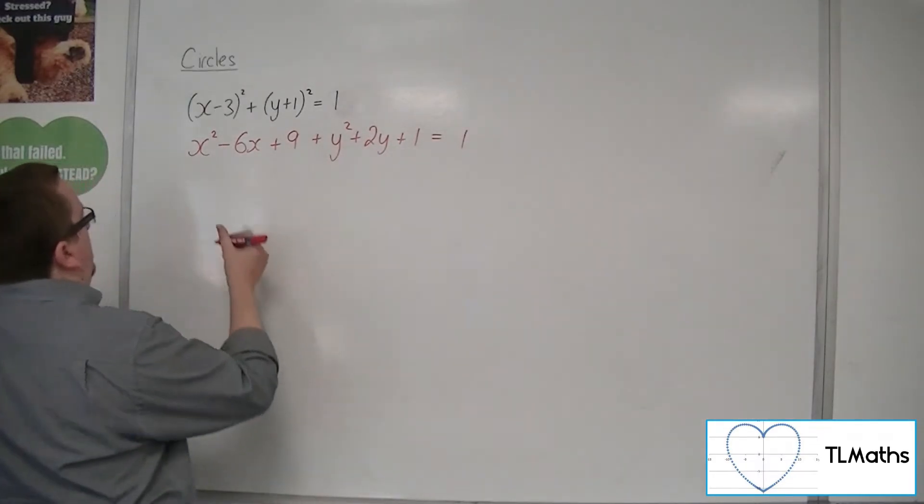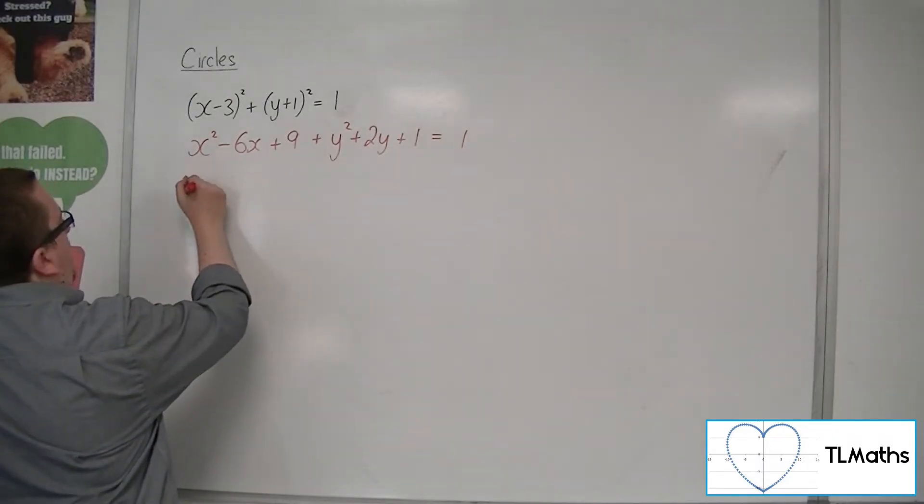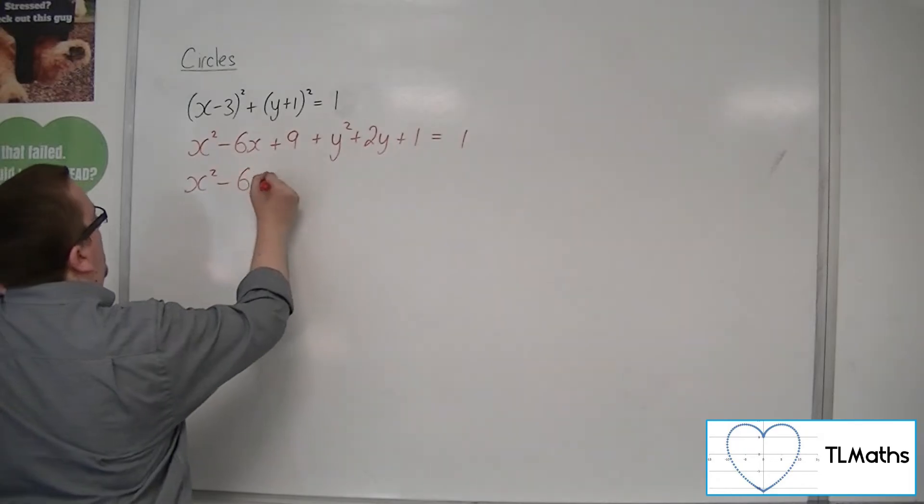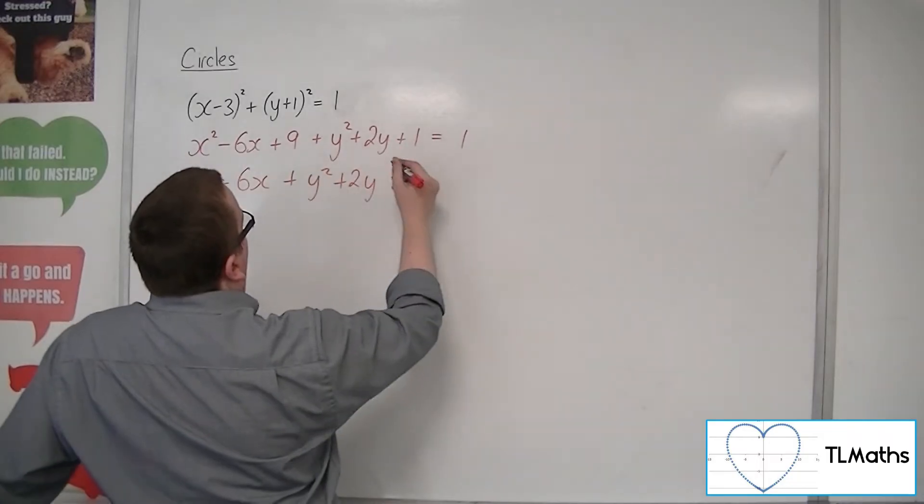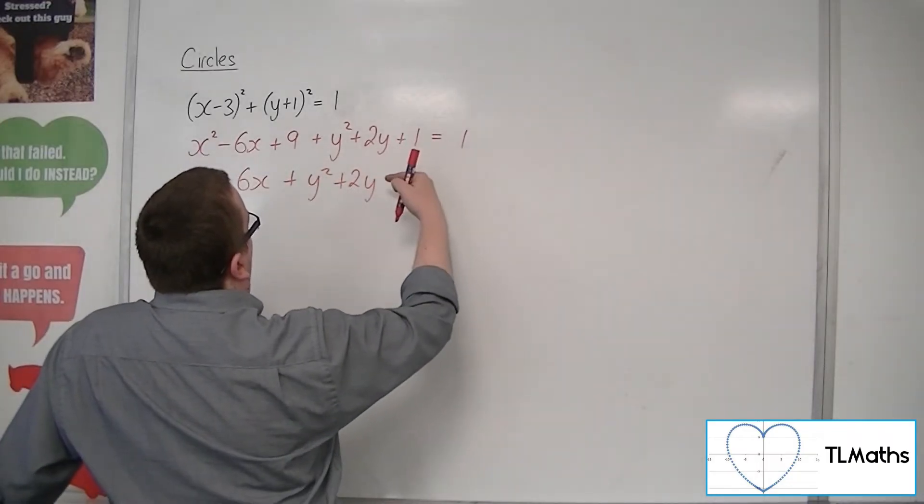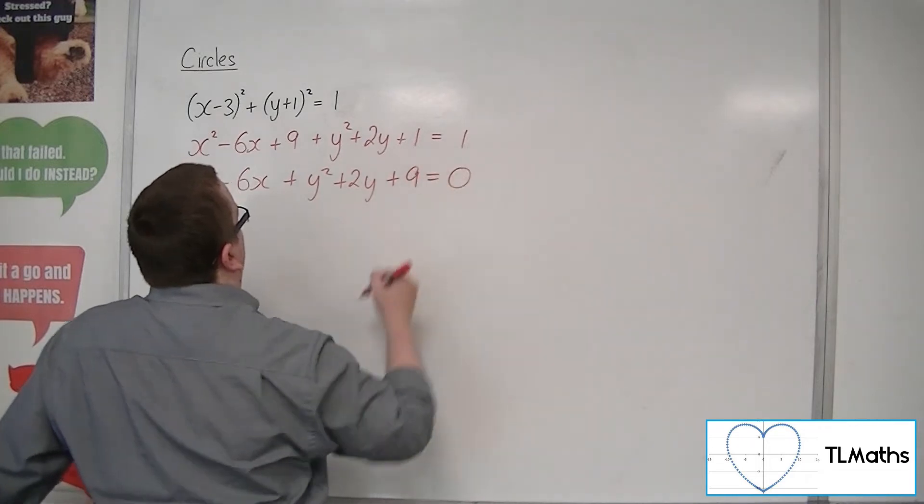If we tidy this up, we might want to group the x squared. Let's leave the x's where they are for the moment. And the y squared plus 2y, 9 and 1 is 10. Take the 1, so 1's canceled effectively, so we've got plus 9.